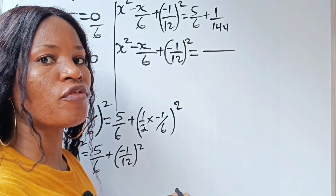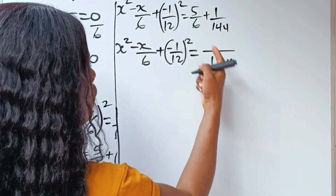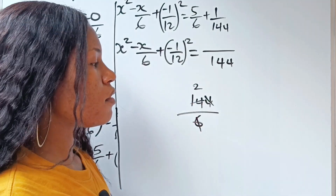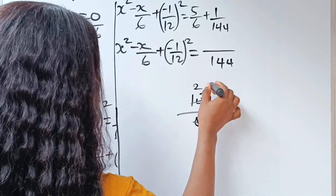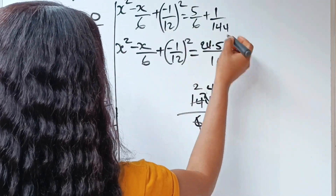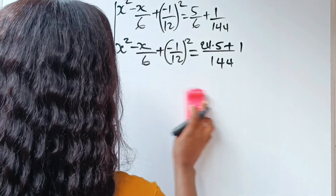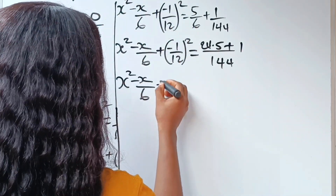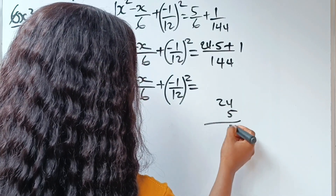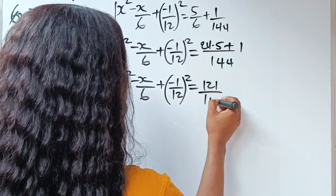We have x squared minus x over 6 plus minus 1 over 12 squared is equal to, now the LCM of 6 and 144 is 144. So 144 divided by 6 is 24, and 144 divided by 144 is 1. That gives us 24 times 5 plus 1 times 1, all over 144.